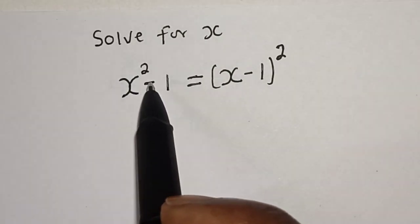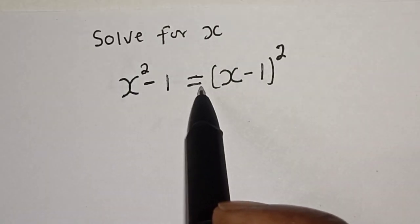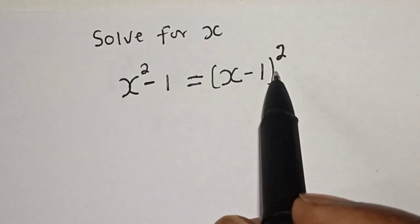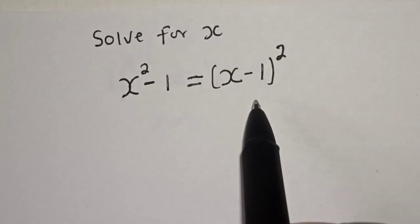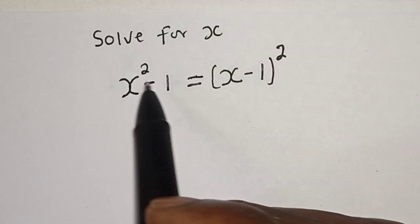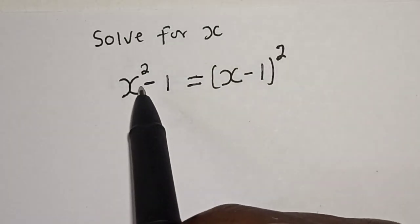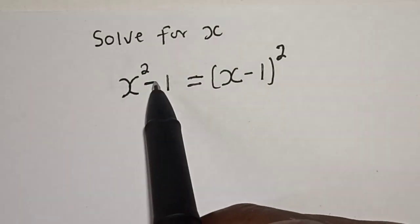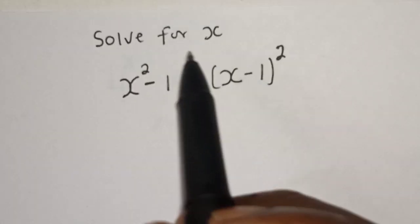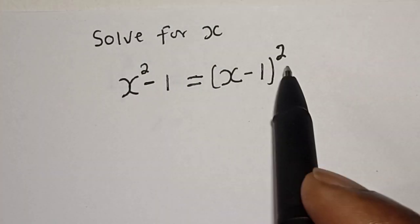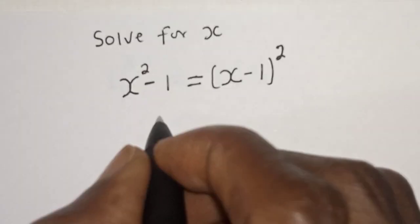So for s, s squared minus 1 is equal to (s minus 1) squared. Hi everyone, welcome to my class. In this class, I want to find the value of s from this nice equation. But before we proceed, please don't forget to like, share, comment, and subscribe.